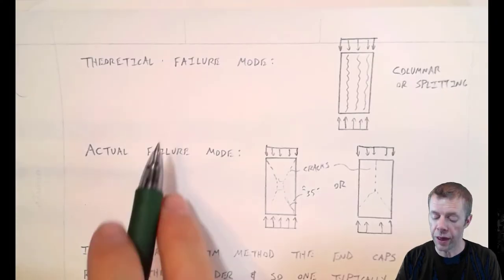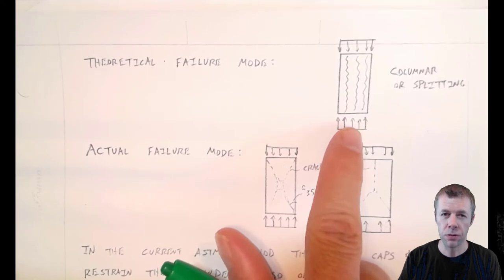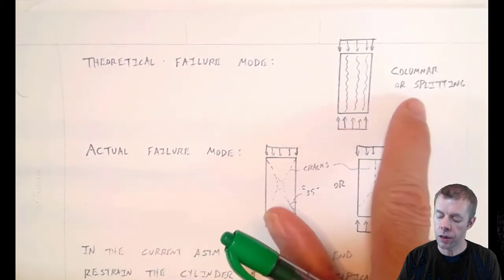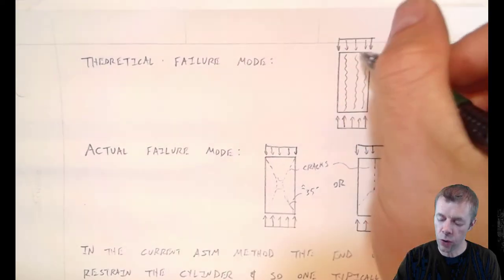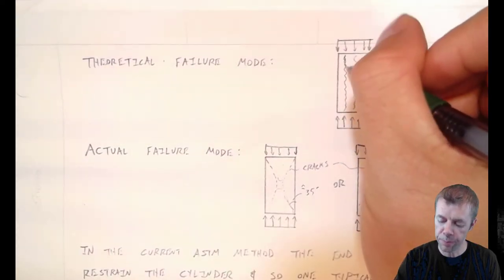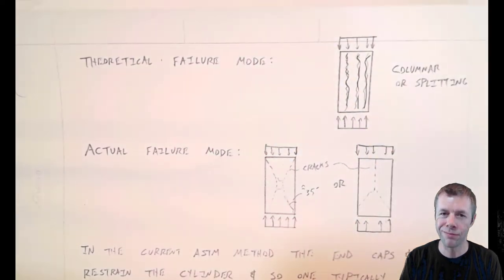When you're loading these things, theoretically, the failure load should look something like this. Theoretically, you should get a columnar or a splitting failure. This idea that as it's being loaded that these areas would split down the length. Theoretically, that's what should happen, but it doesn't.